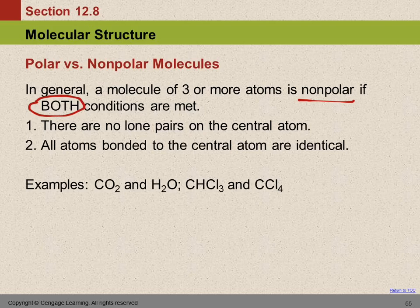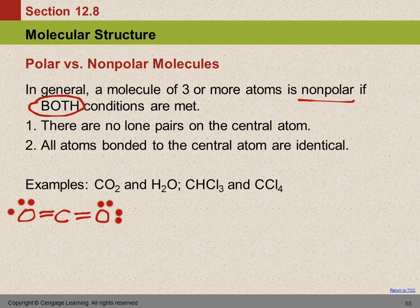So let's look at these examples. I'm going to draw the Lewis structures for you. We have to look at the Lewis structure. So there's carbon dioxide. First, look at the central atom — are there any lone pairs? No. Are the atoms bonded to the central atom the same? They're both oxygen. So this one is non-polar.